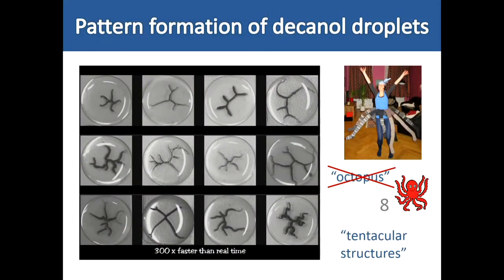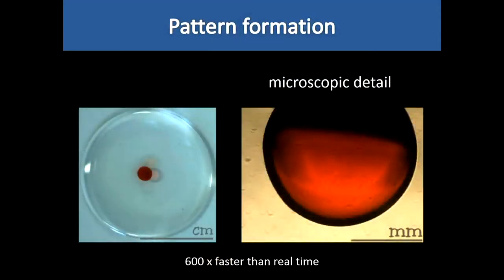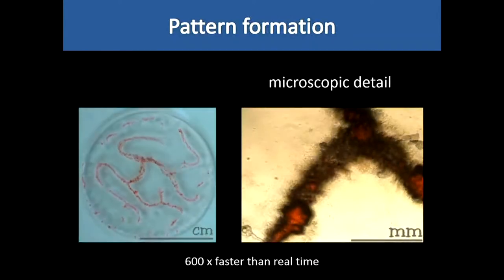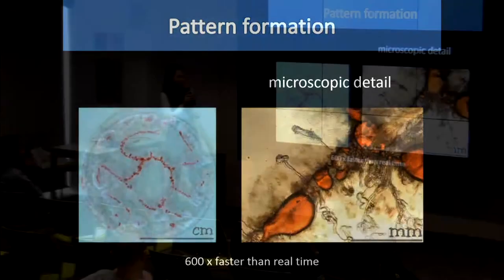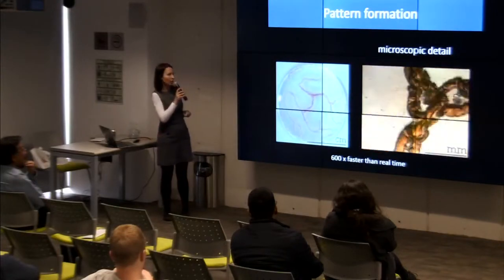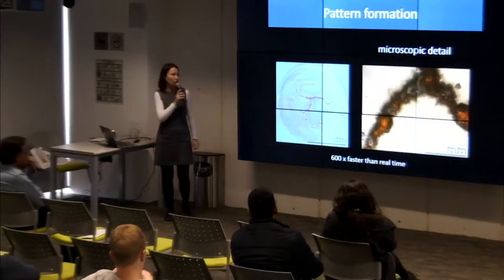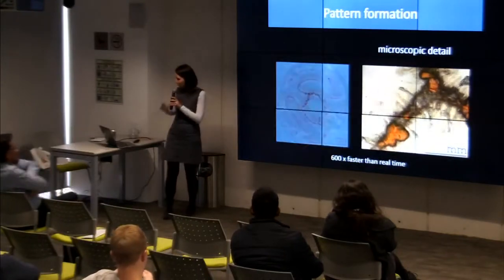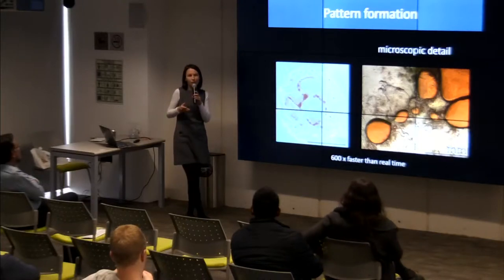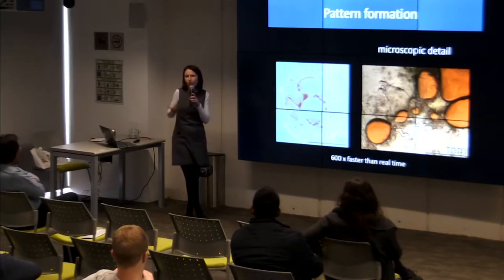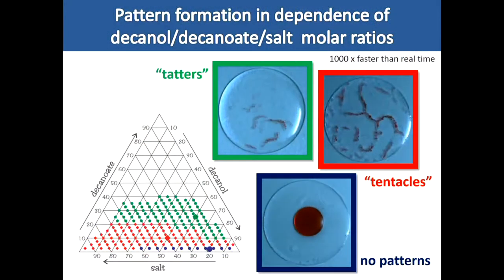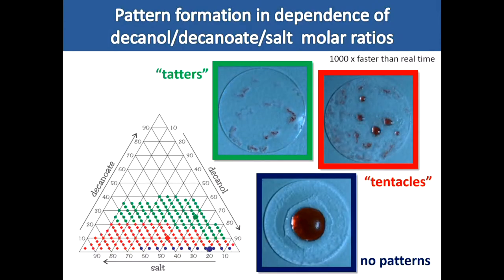Here we can see how the shape changes look under the microscope. On the macroscopic level you can observe it with the naked eye. On the microscopic level we can also observe very interesting phenomena like myelin figure formation. It is a really complex system where it is difficult to say what is going on. In this moment we don't know exactly what happens, but we can predict what will happen if you perform some experiments.